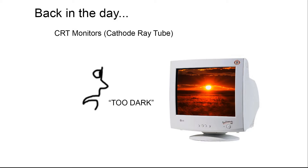Back in the day we had CRT monitors, or cathode ray tube TVs. The scientists dealing with this started to notice these monitors looked a little dark — the image didn't match what it looked like in real life. Due to the display output, they decided to change the image itself. They did a little cheat: they added a gamma 2.2 curve. Gamma is about not touching the highlights or absolute blacks and whites, but playing with the midtones — taking the midtones up to 2.2.